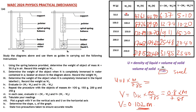Look at the trend in the table: as the mass in air increases, the values in both the water and kerosene columns also increase. Notice that the weight in air is always greater than the weight in water, which is always greater than the weight in kerosene. Once you get a trend that follows like this, there's no need to panic. The most important thing is to plot your graph correctly. Don't forget to subscribe, like, and share your comments.